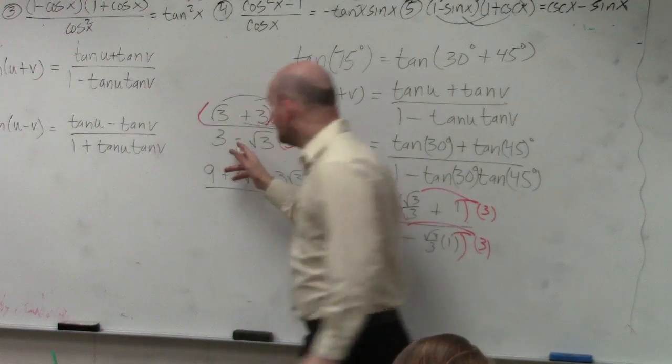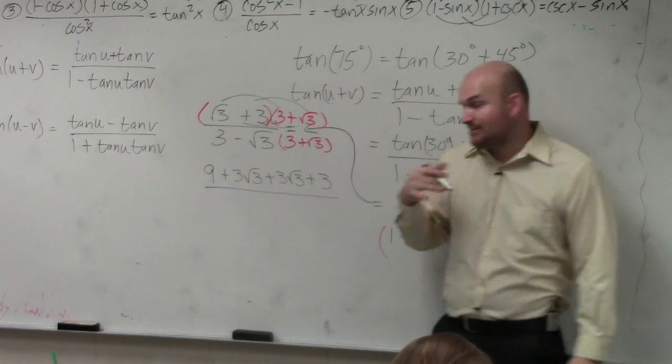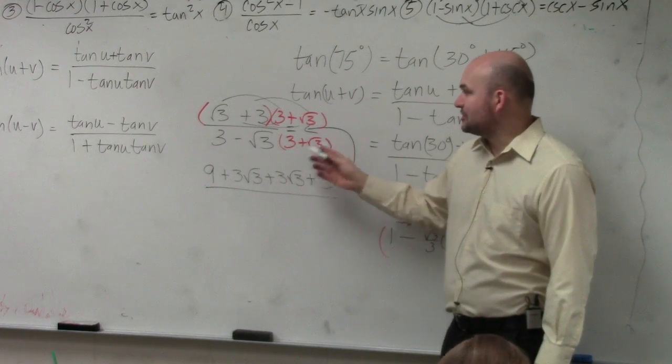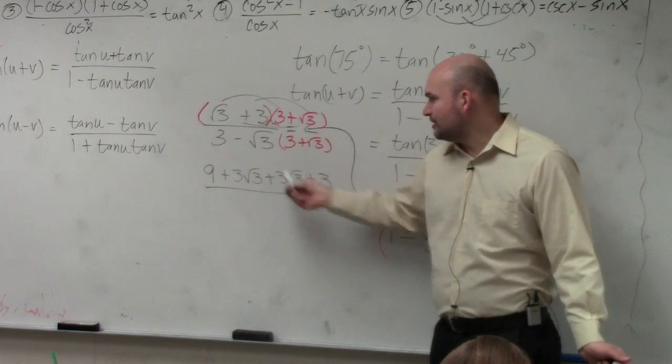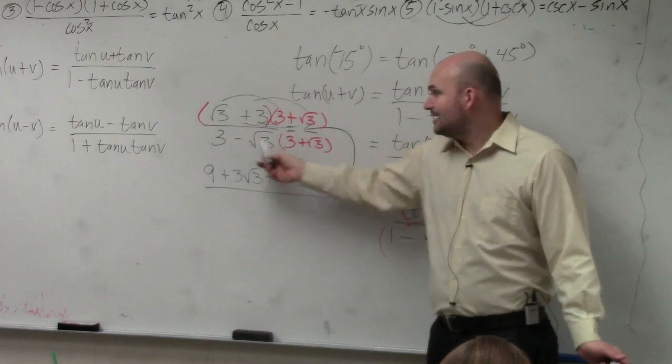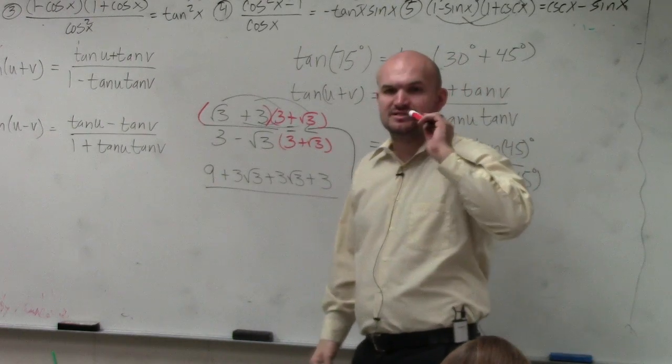And then the denominator, what's nice about multiplying a denominator by its conjugate is it becomes the difference of two squares. The middle terms are going to divide out. Where here, the middle terms are going to add together. Here, the difference of two squares, the middle terms divide out or subtract to 0.